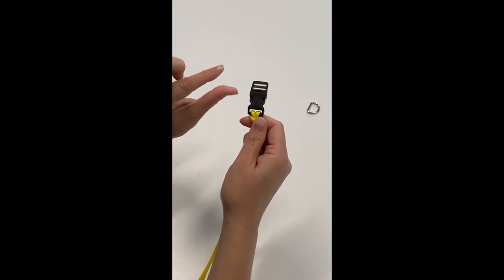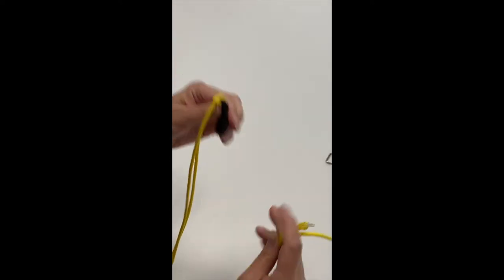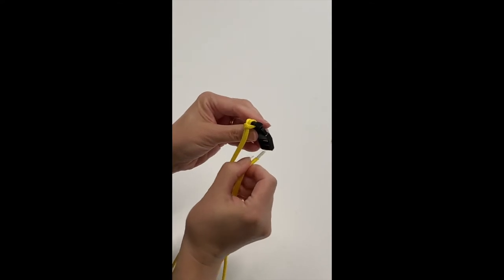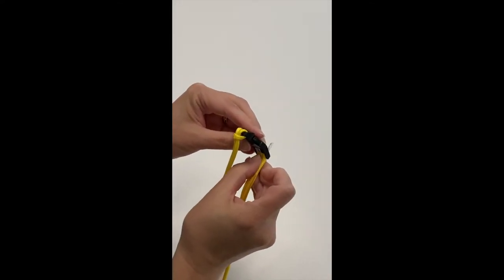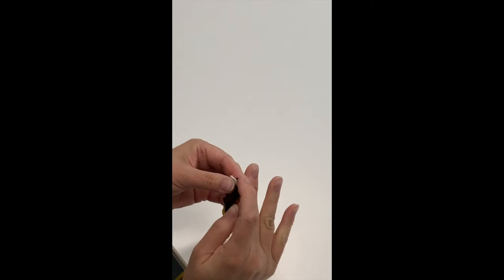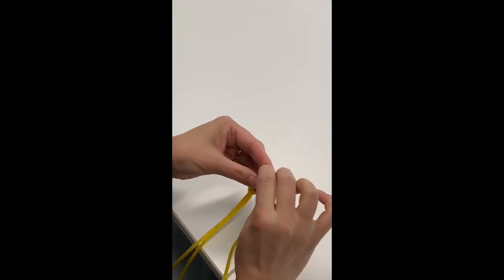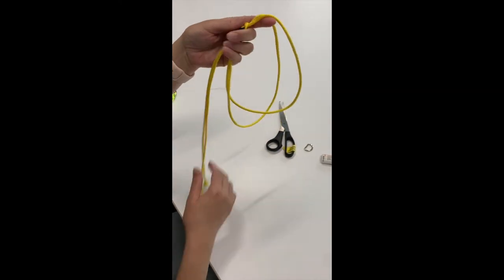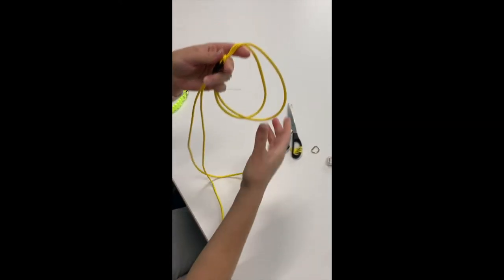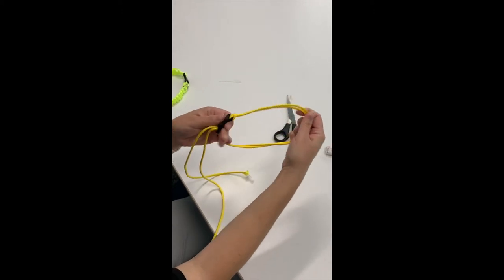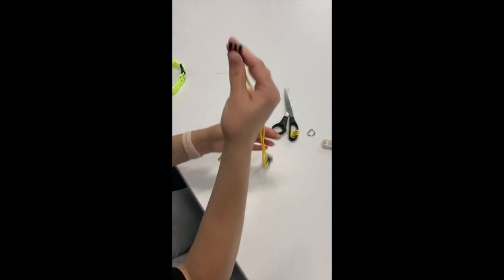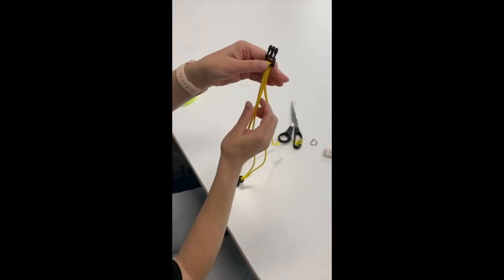Then you're going to flip over your clip and insert your two ends of the paracord at the bottom of the clip and pull it through. So once you have it pulled through, you're going to pull your paracord through so that you have a loop. And you're going to then unbuckle it. You will now have four strands.